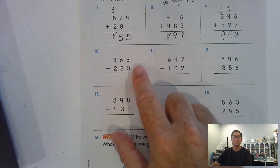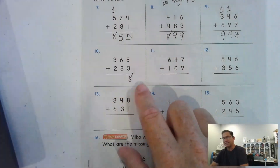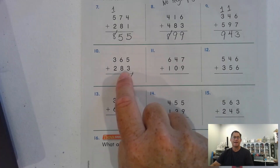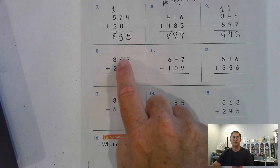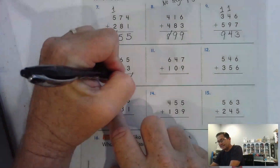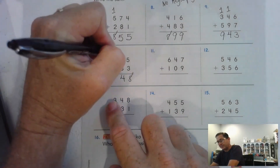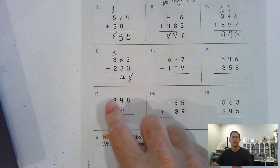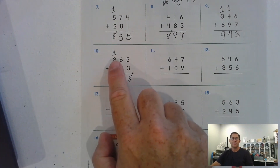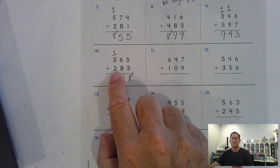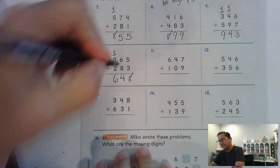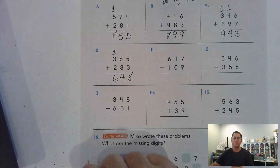Number ten: five and three ones is eight ones — don't have to regroup the ones. Eight tens plus six tens is fourteen tens — we know fourteen tens is a hundred and forty, so we're going to regroup that as one hundred and four tens. Add the hundreds: three and two more hundreds is five hundreds, plus the regrouped hundred, six hundred. We don't have to regroup the hundreds.